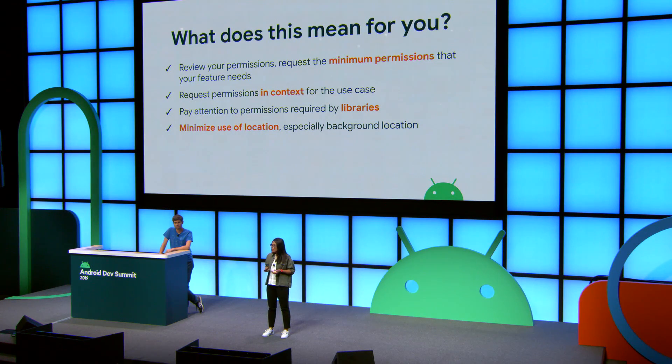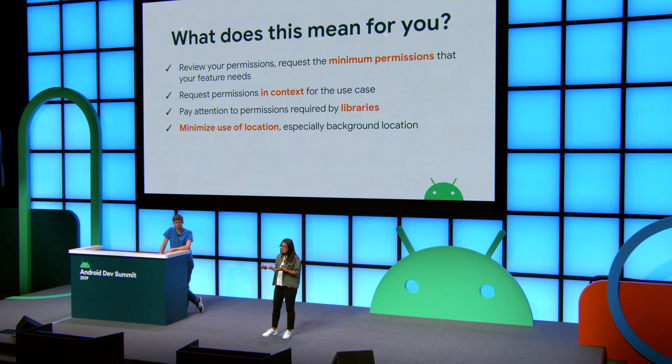Design your app to work under the conditions where you have only "while in use" access, because more than half of users are selecting that option and you may never actually have access to the background. Finally, be transparent about the data you're using — let your users know why you need access to that data. These best practices are based on principles and values that drive our product development process and will continue to drive how we innovate in this space.